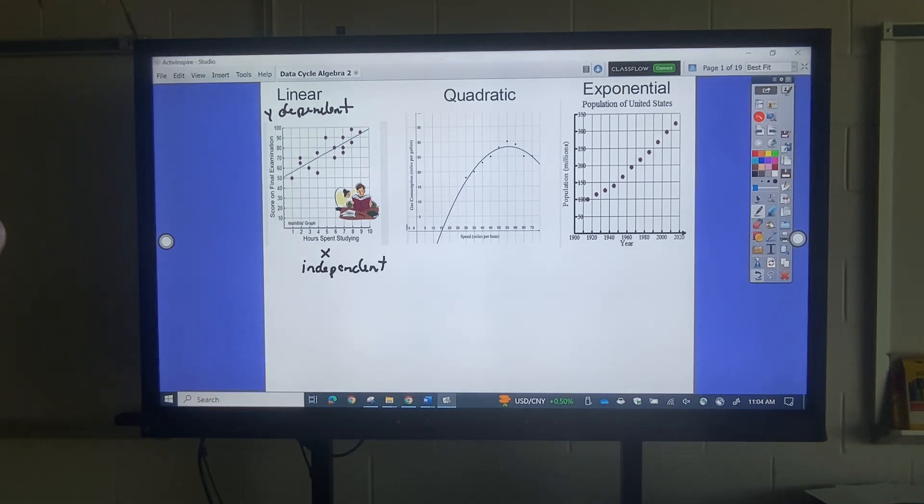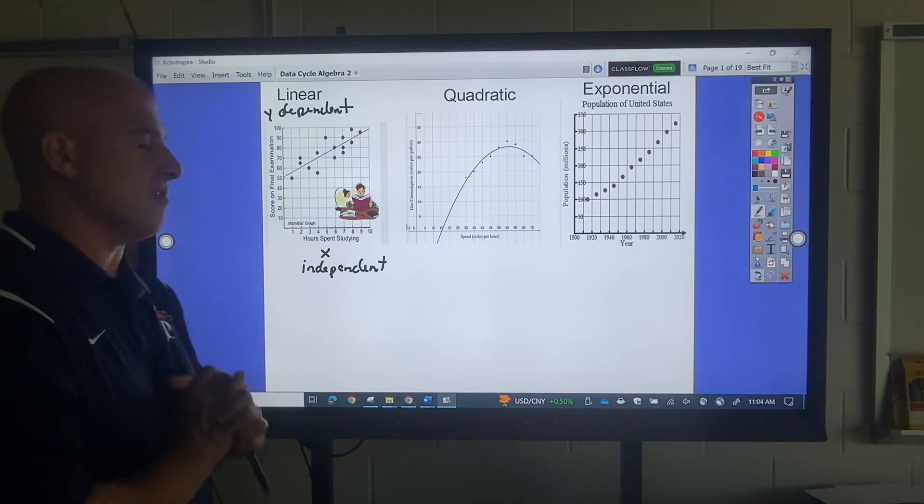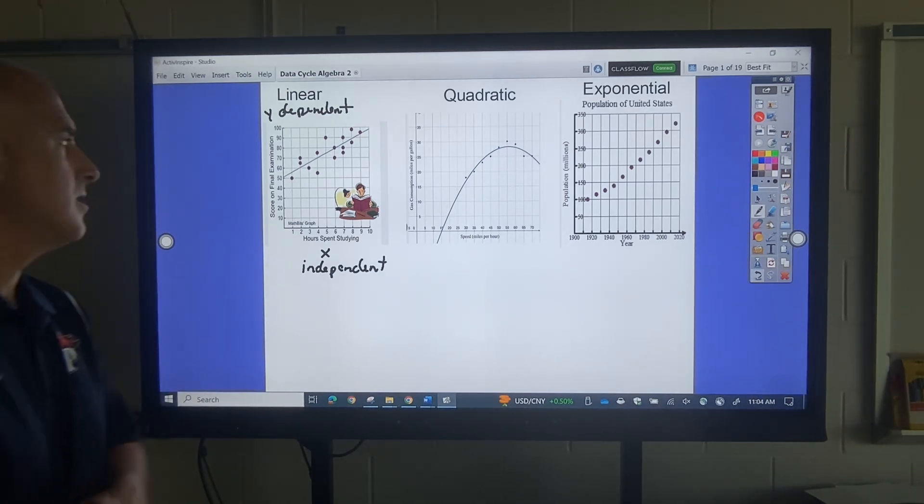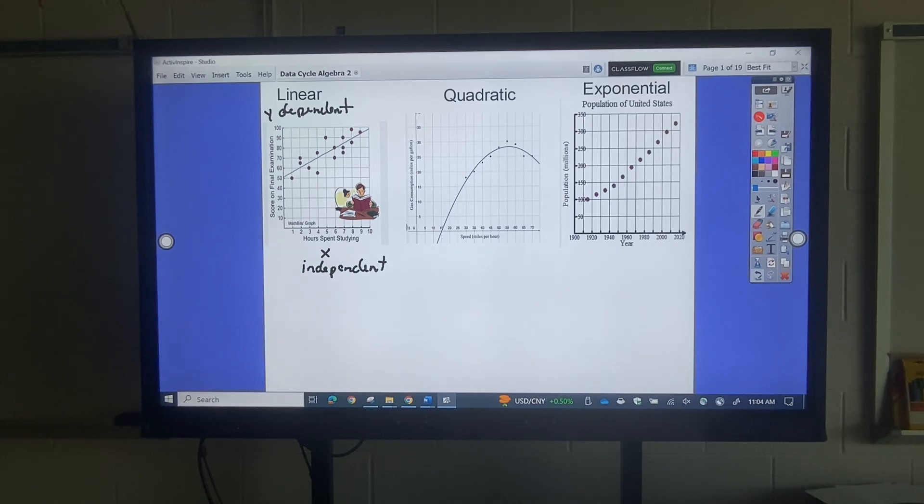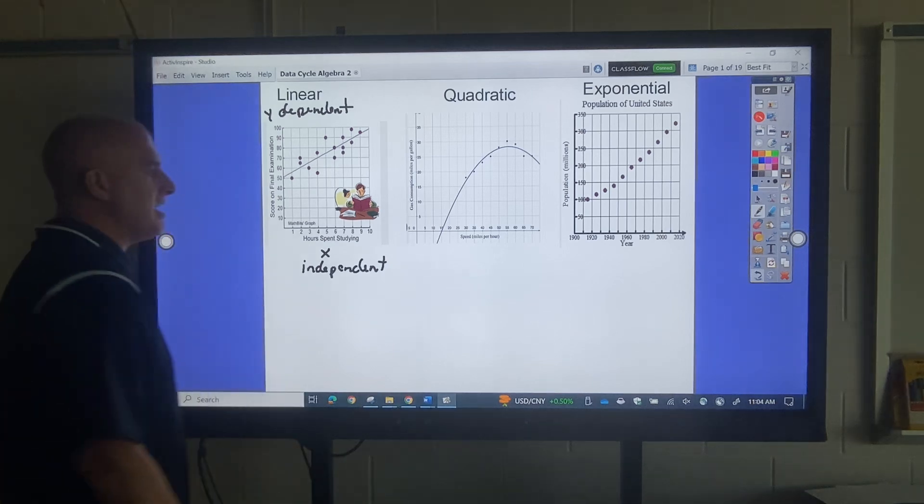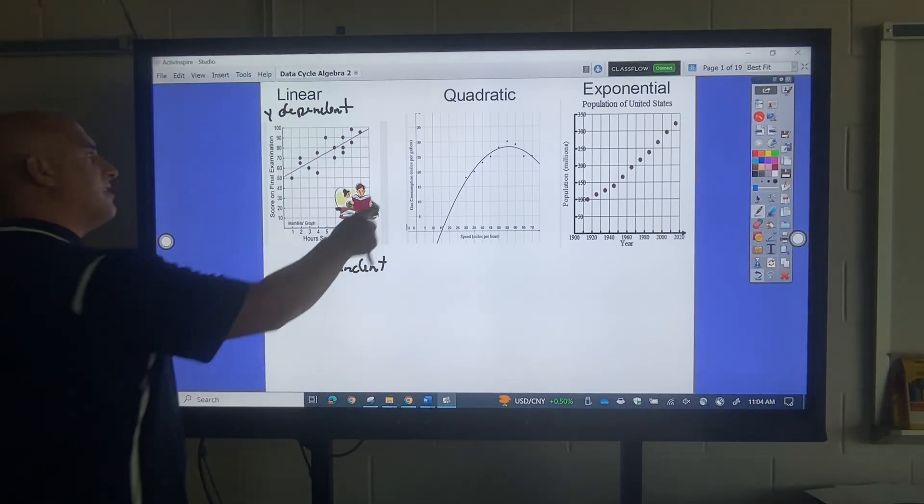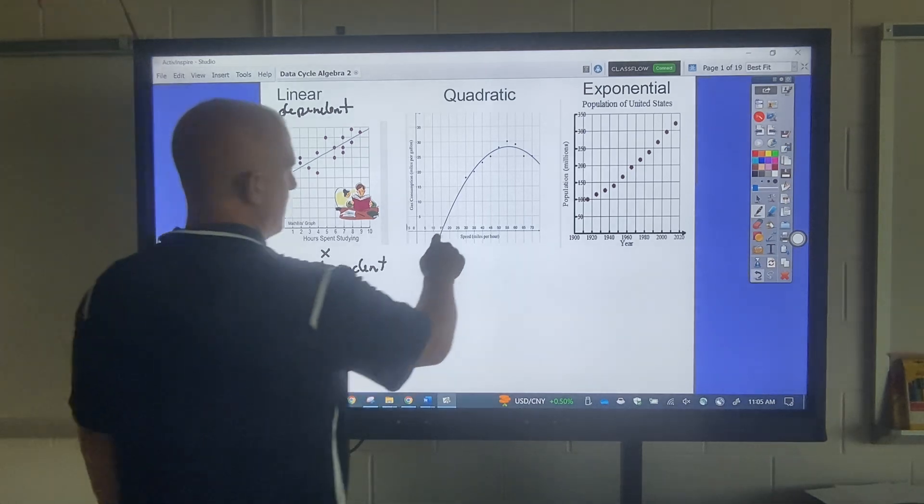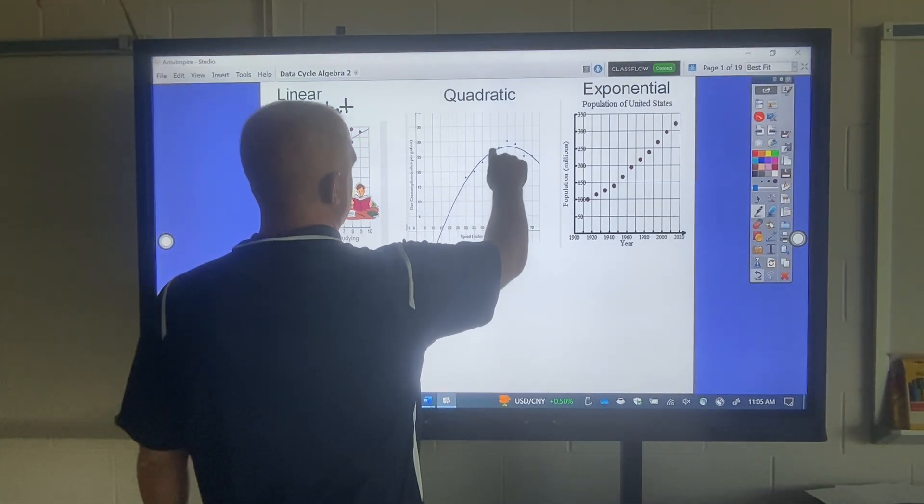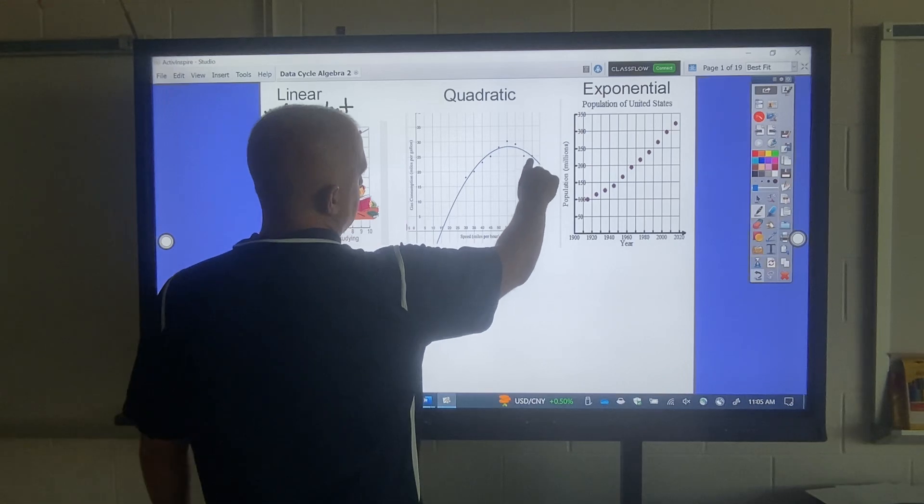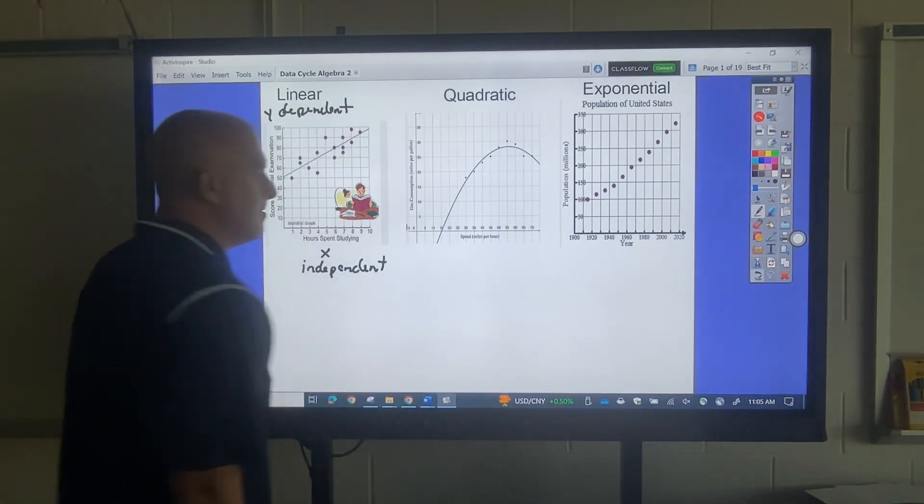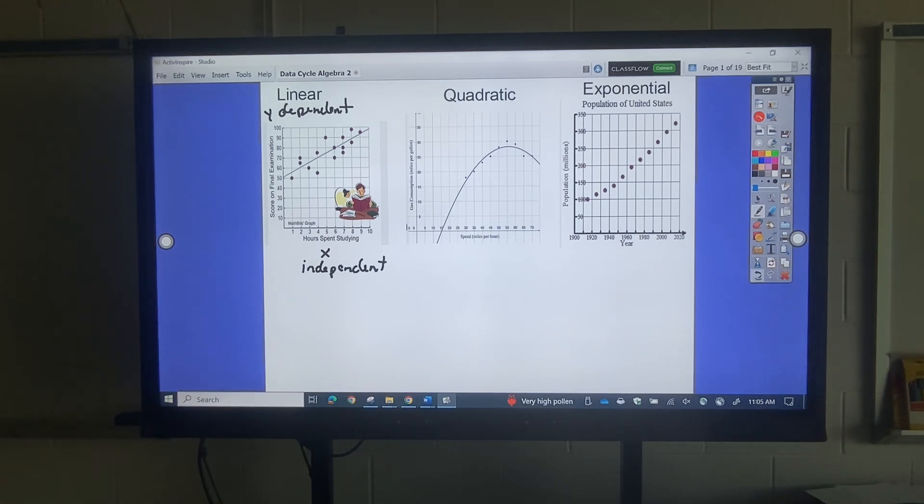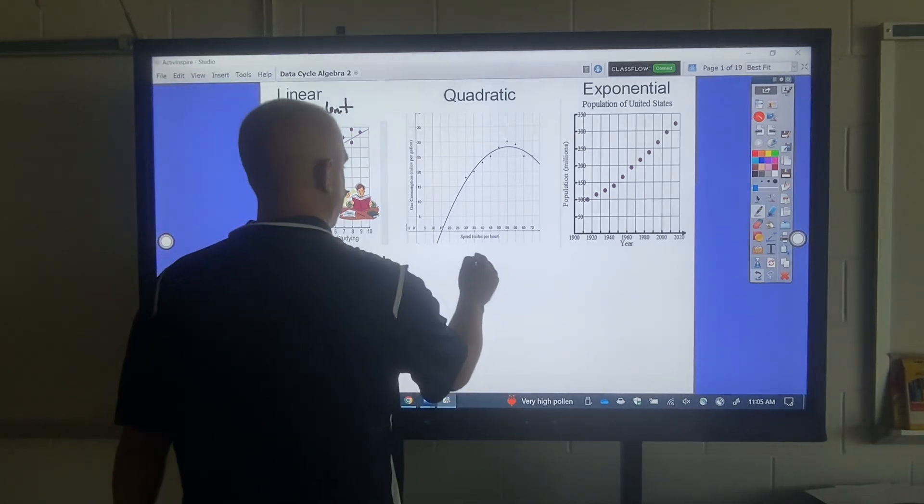Let's look at this one. This is a quadratic. I would like you to write down what you see here. So this right here is speed in miles per hour. This is gas consumption. So what happens? The faster you go, the more gas is needed to expend, and then eventually your car will be running at a certain level. It won't need to expend as much gas consumption. Once again, x and y.